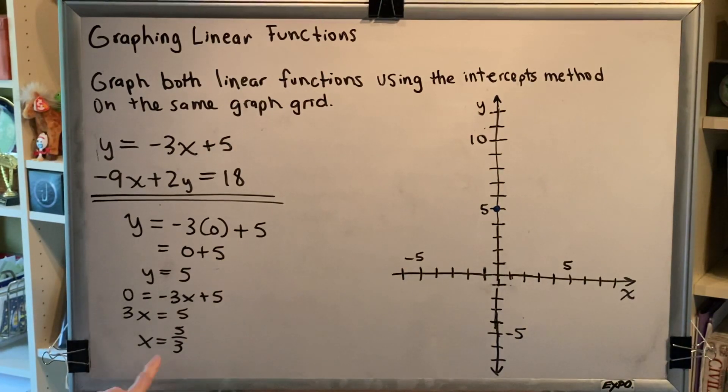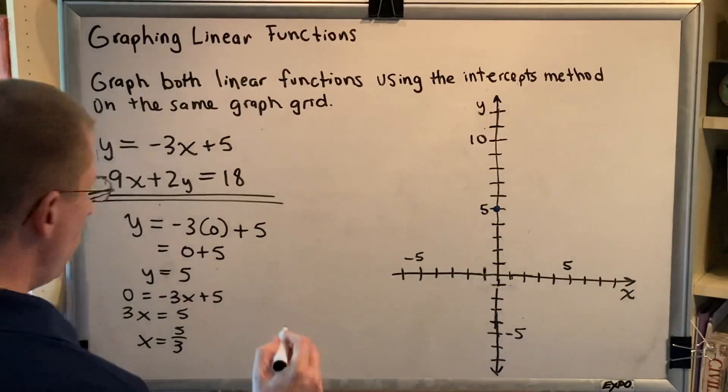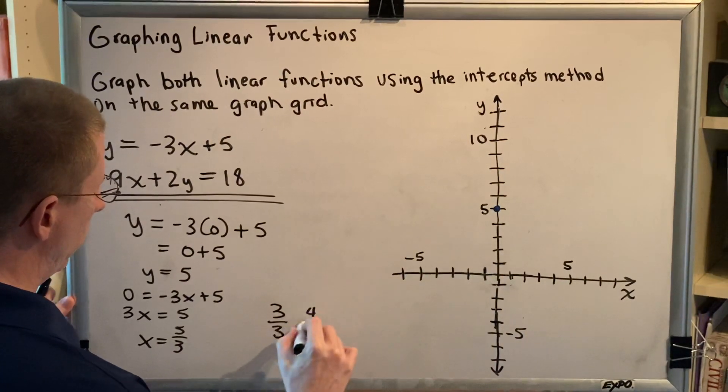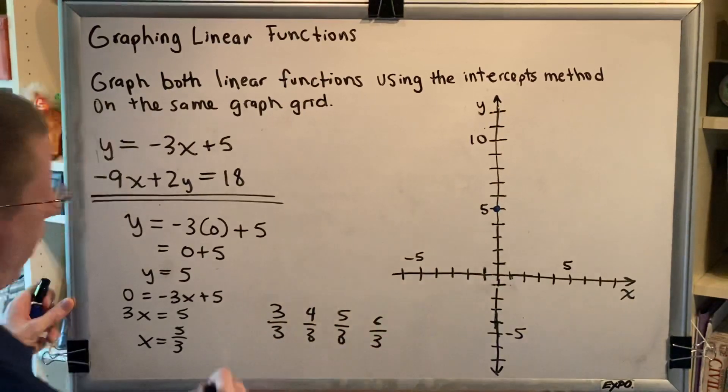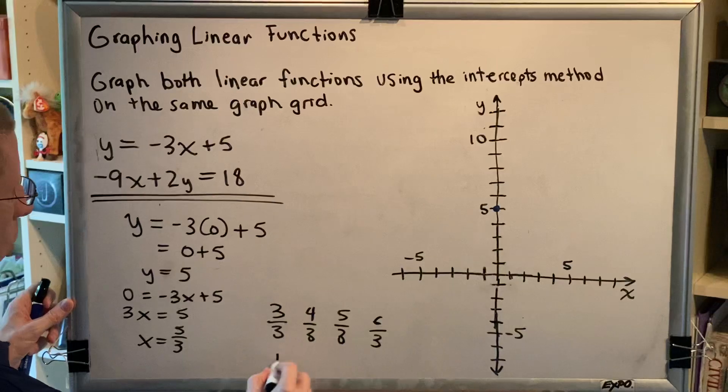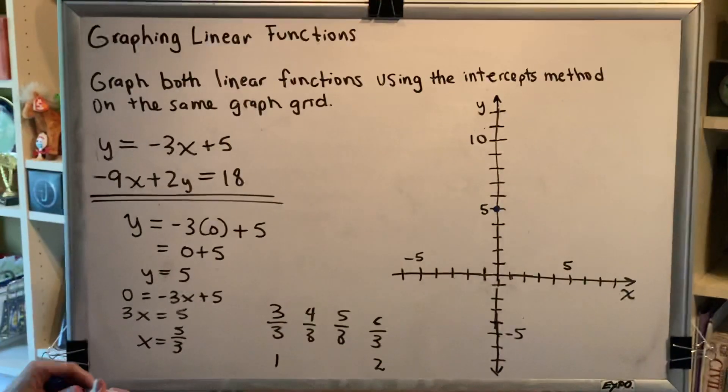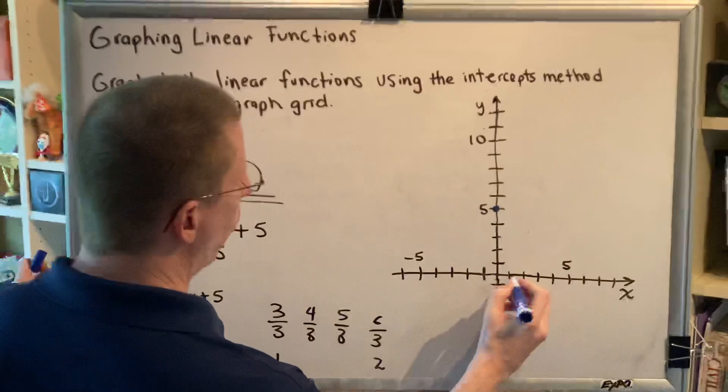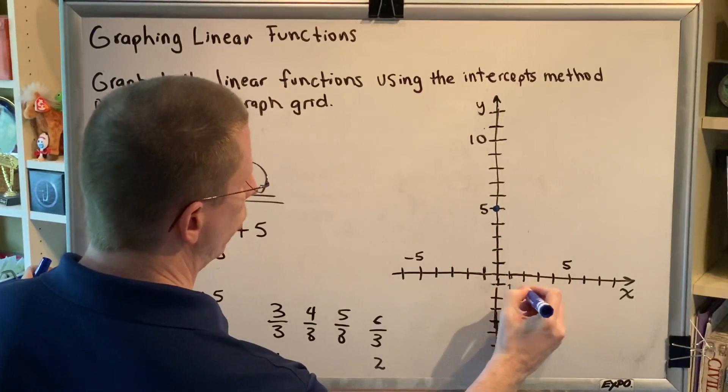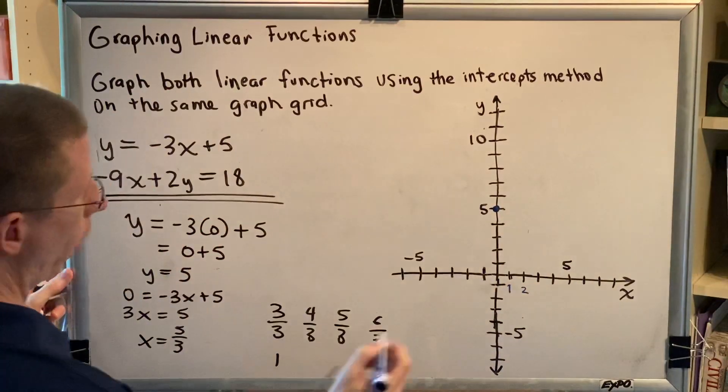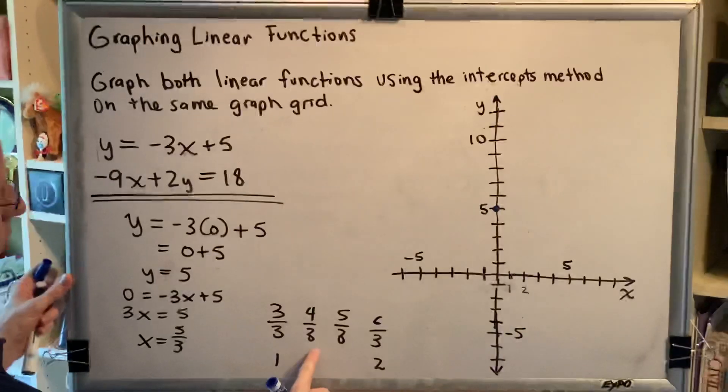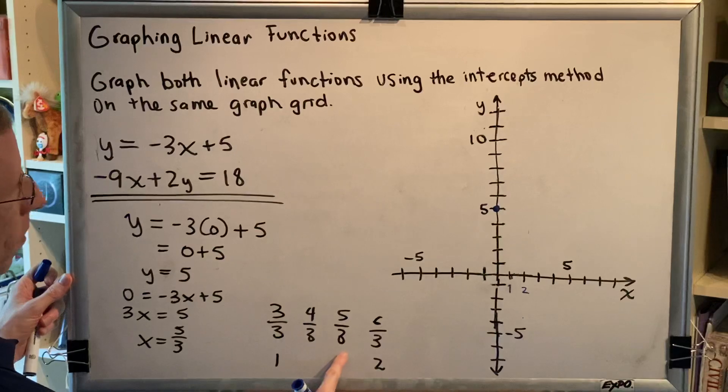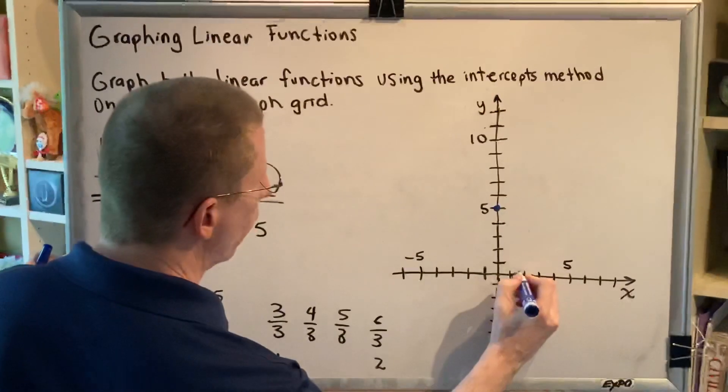We need to figure out where is five-thirds so that we can graph that. Well, if you think about it, five-thirds must be somewhere in between one and two. So if I take the space from one to two and I divide it so that there are two little marks in between, the first little mark in between would be four-thirds and the next little mark would be five-thirds. So that would be this point right here.